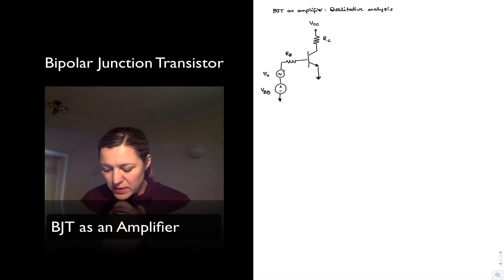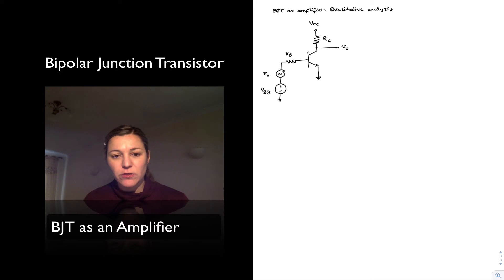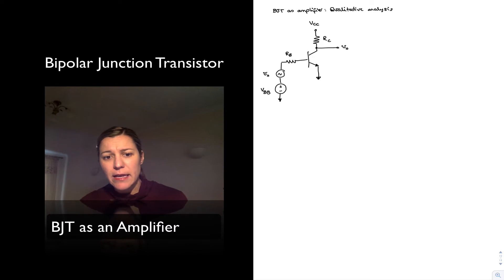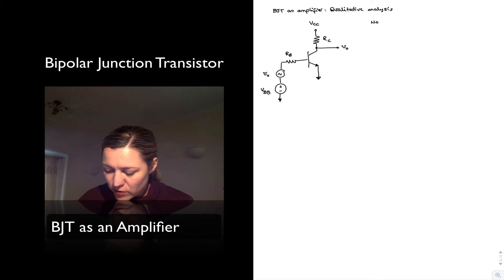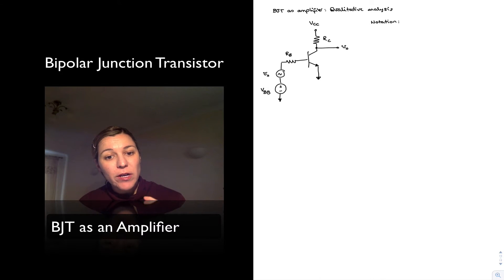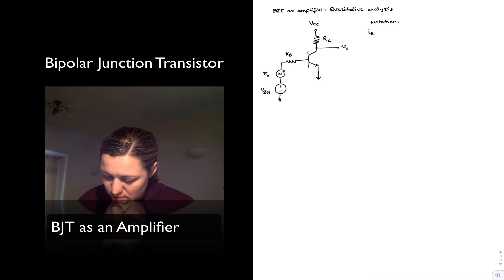I'll apply my input signal to the base and I'll take out my output at the collector. We will see that for different amplifiers we're going to be applying the input and taking the output at all different places, but this is just an example. Now, one important thing about notation: now that we're going to be talking about DC signals and small AC signals, how do we represent the different types of signals? Our convention is going to be as follows — it's a fairly standard convention. We're going to represent the total instantaneous value of any signal within the circuit with a lowercase letter and an uppercase subscript.